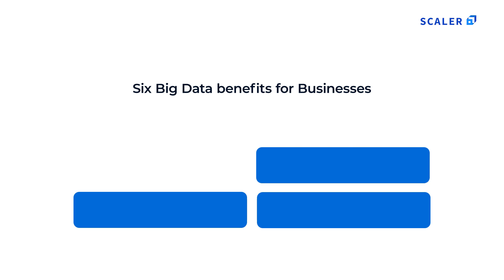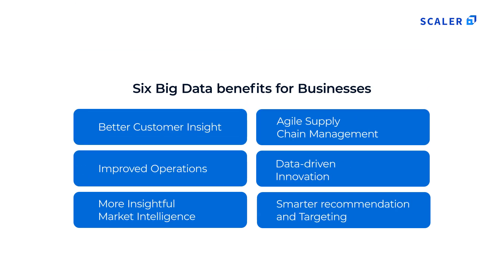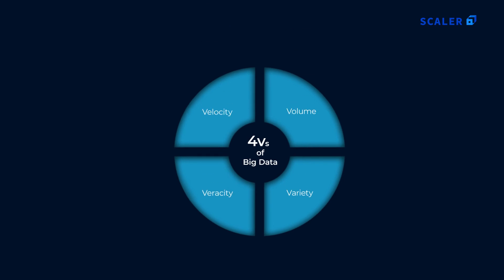Big data analytics is used in the energy industry to identify potential locations for drilling and examine pipeline operations for gas and oil companies. It helps financial service organizations undertake risk management and conduct real-time analysis of market data. Transportation companies and manufacturers use it to optimize delivery routes and manage supply chains. It is also used for smart city initiatives, crime prevention, and emergency response by governments.